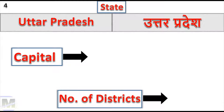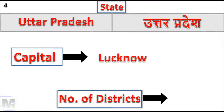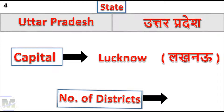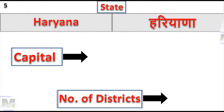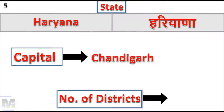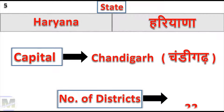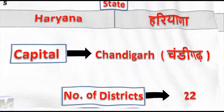Uttar Pradesh: Capital Lucknow, Number of Districts: 75. Haryana: Capital Chandigarh, Number of Districts: 22.